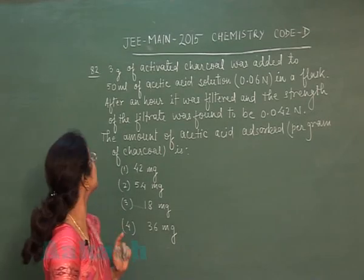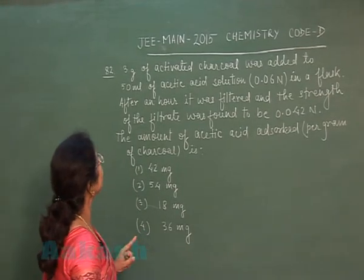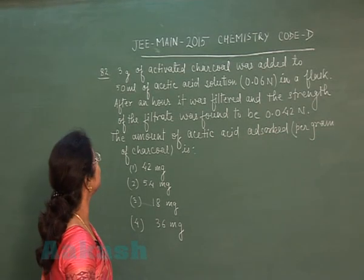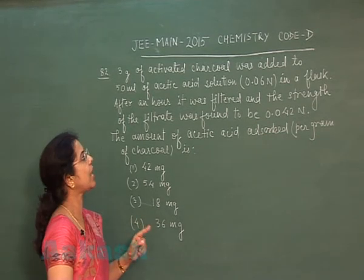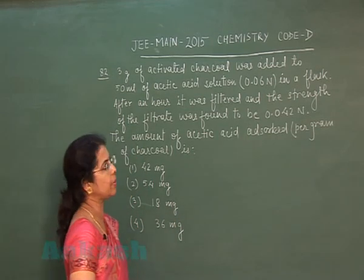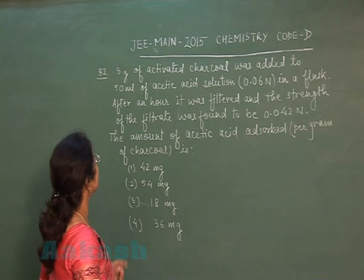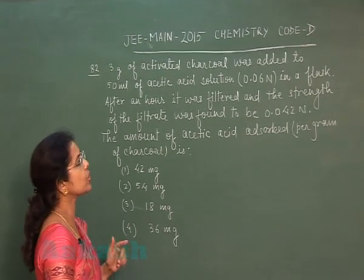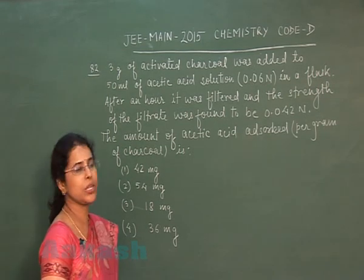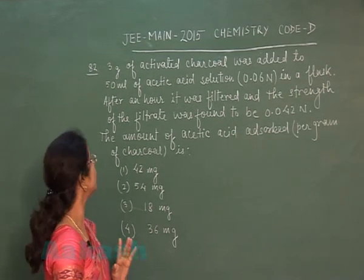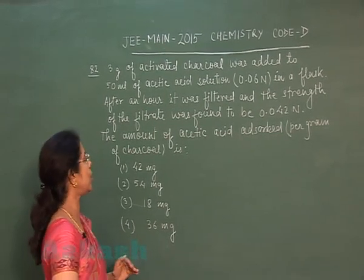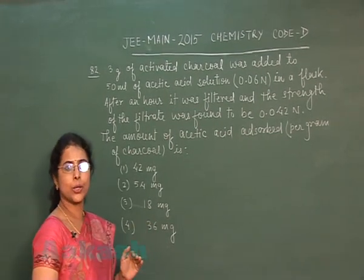Next question is question number 82. 3 grams of activated charcoal was added to 50 milliliters of acetic acid solution of 0.06 normality in a flask. After an hour it was filtered and the strength of the filtrate was found to be 0.042 normal. The amount of acetic acid adsorbed per gram of charcoal is?